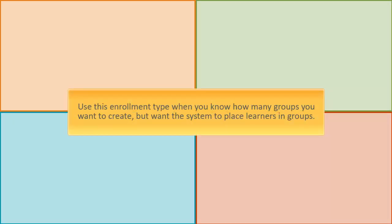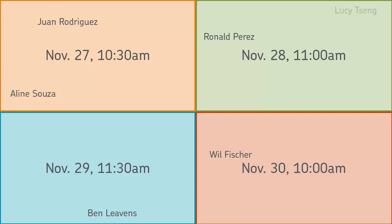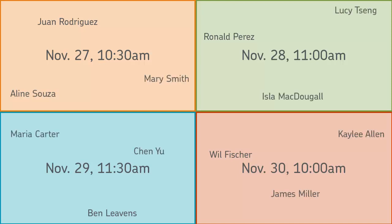Use this enrollment type when you know how many groups you want to create but want the system to place learners in groups. For example, your class is taking a trip to the campus observatory. The observatory has four days that it can give demonstrations. You use the 'Number of Groups' enrollment type to randomly divide the learners into groups.